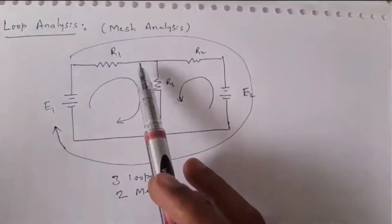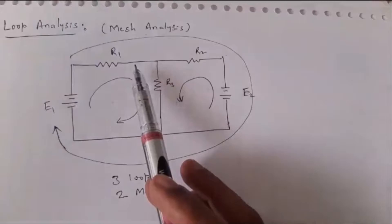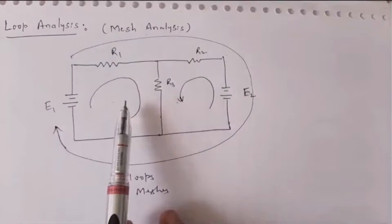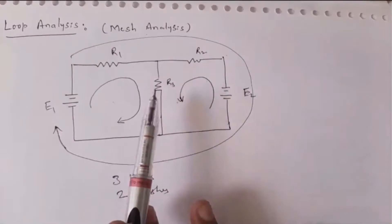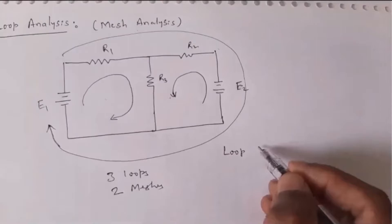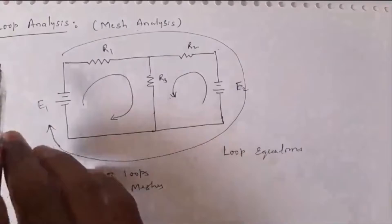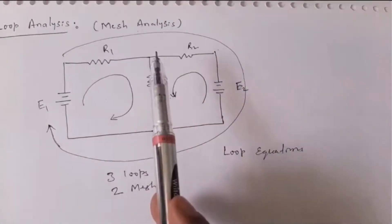Previously we discussed analysis using KVL, KCL, Ohm's law, voltage division rule, and current division rule. Loop or mesh analysis is one more method. What we do in this method is get equations called loop equations or mesh equations. If we call it loop analysis we say loop equations; if we call it mesh analysis we say mesh equations.